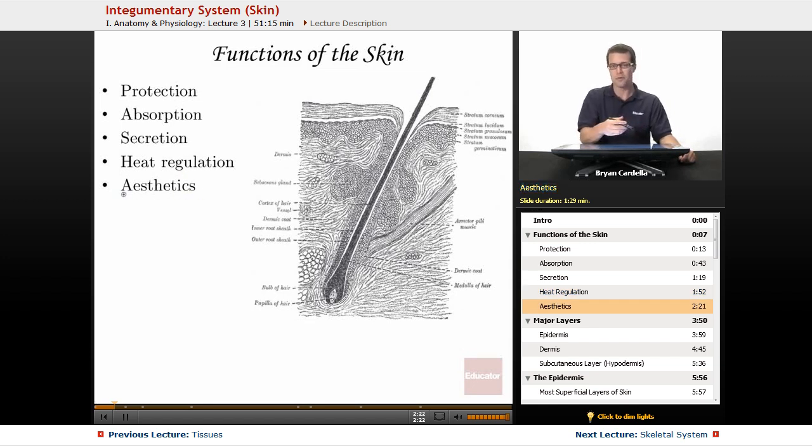And finally, aesthetics. A lot of people don't think about this, but aesthetics means beauty, and if you find someone attractive, when you look at them, what your eyes are actually seeing is the light reflecting off of their epidermis. That's what we notice when we look at someone, is those epidermal layers, the outer portions of the skin. So if you're attracted to them, thank their skin for that aesthetic quality.